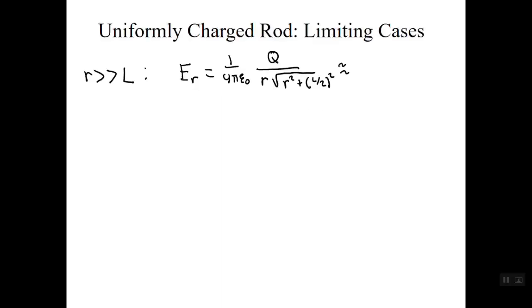As a final note, let's look at some limiting cases for the E field due to the uniformly charged rod. In the limit that r is very large compared to the length of the rod, we see we can neglect the expression containing L in the denominator. And this makes sense because if we're far enough away from the rod, it will, to a large degree, just look like all the charge is at the same spatial location, like a point charge.